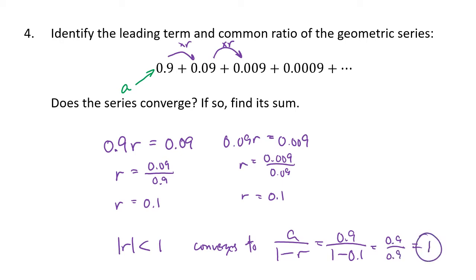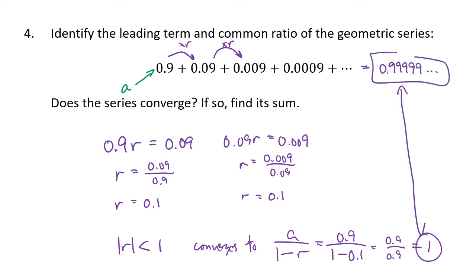One neat thing about this: what we're really saying is 0.9 plus 0.09 plus 0.009, which is just 0.9999 repeating. So this helps justify that 0.9 repeating, in fact, equals exactly 1.